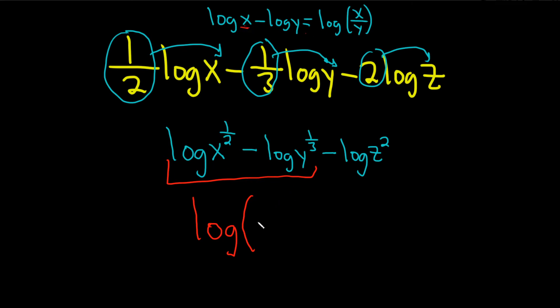So log of this, so x to the one-half over this piece here, y to the one-third. You just divide what's inside the log. So you just divide this one by this one, and then just write a single log. It becomes one log minus log of z squared.